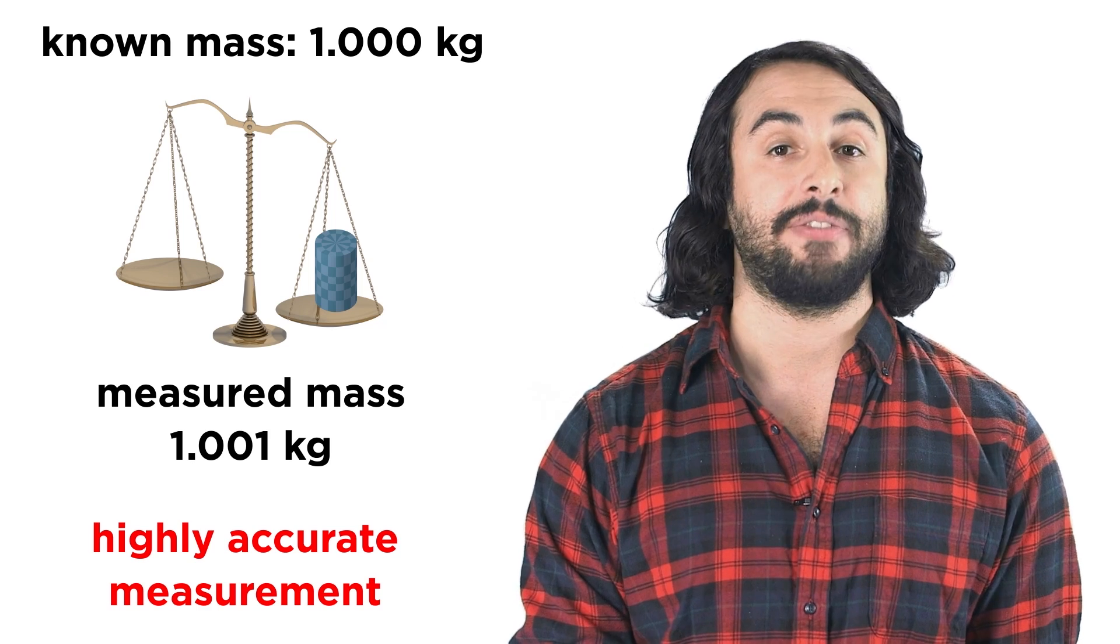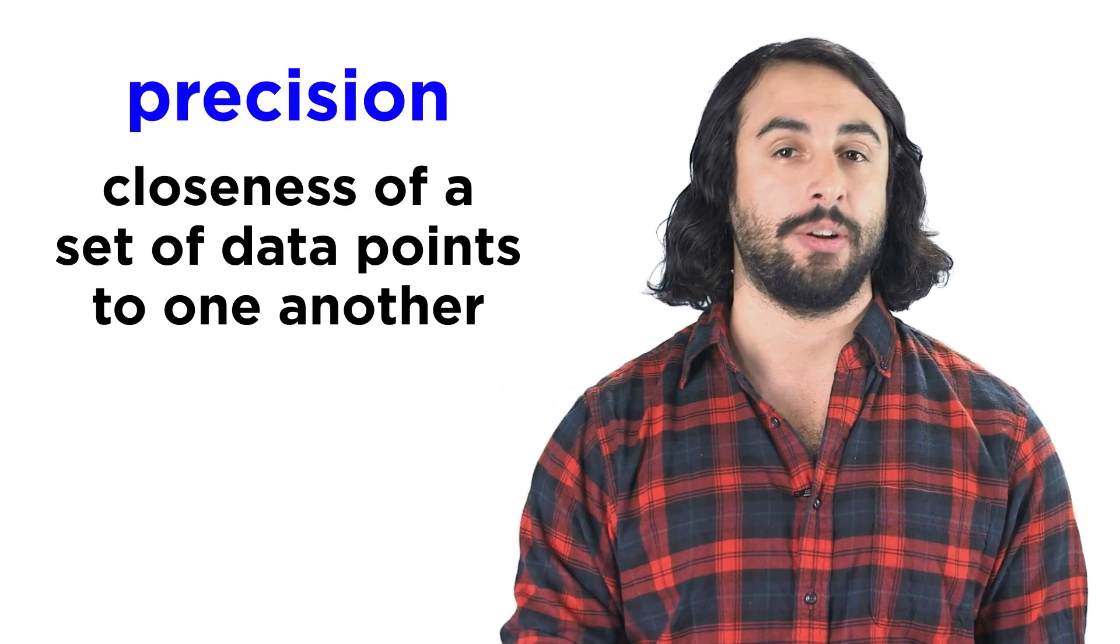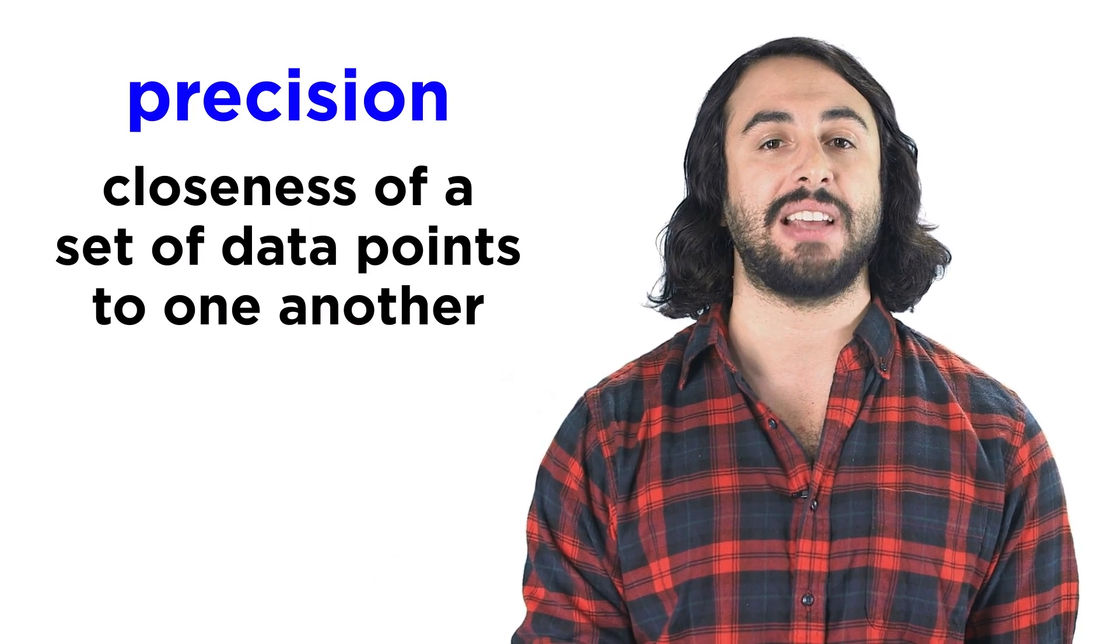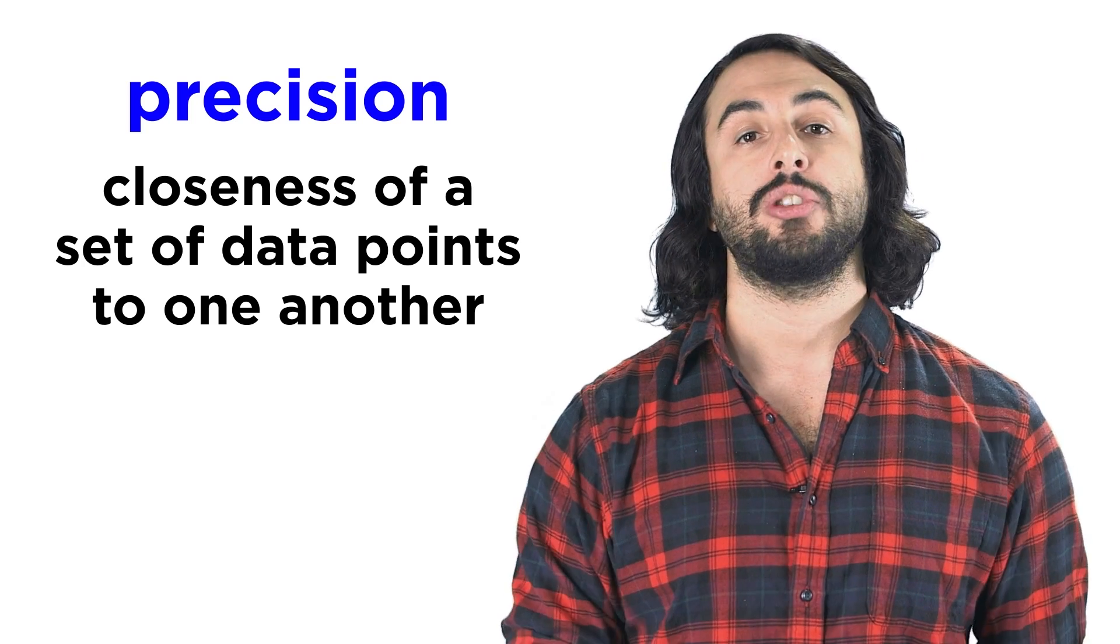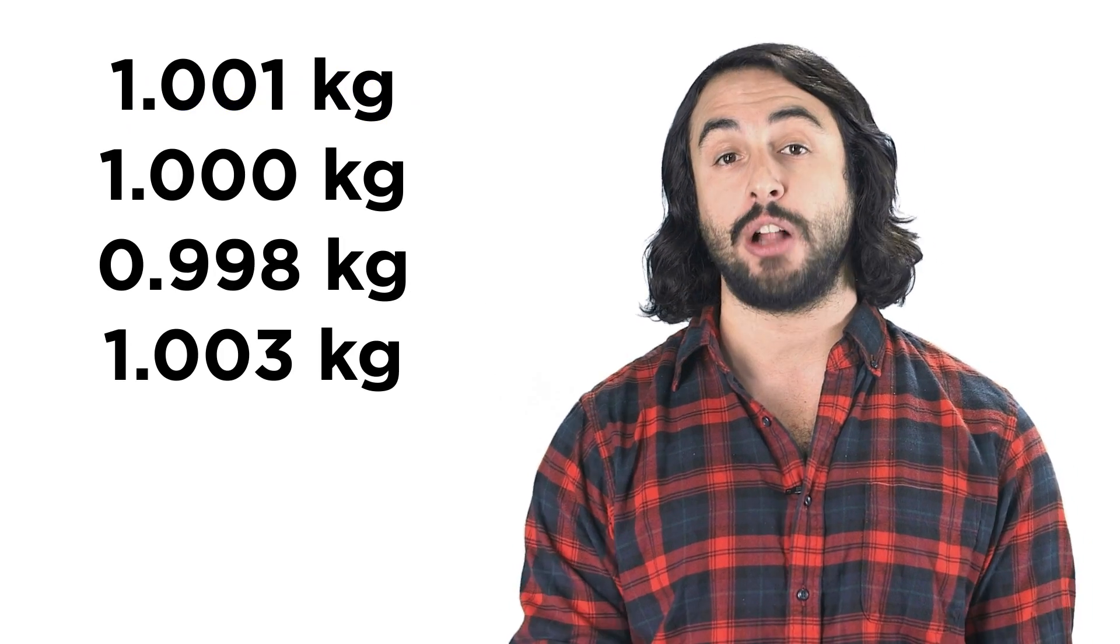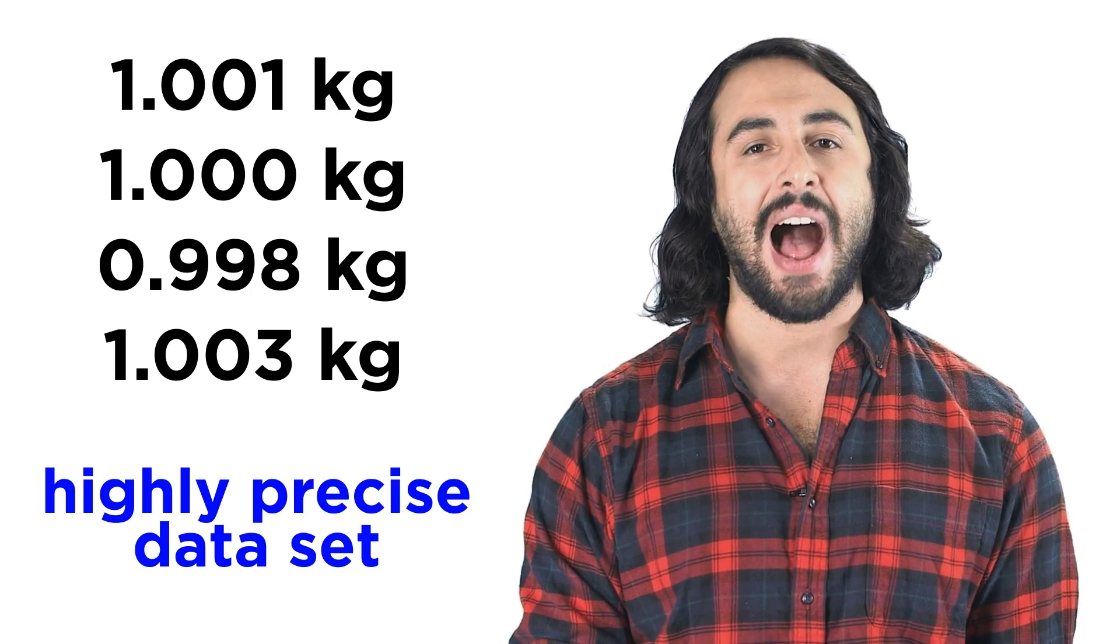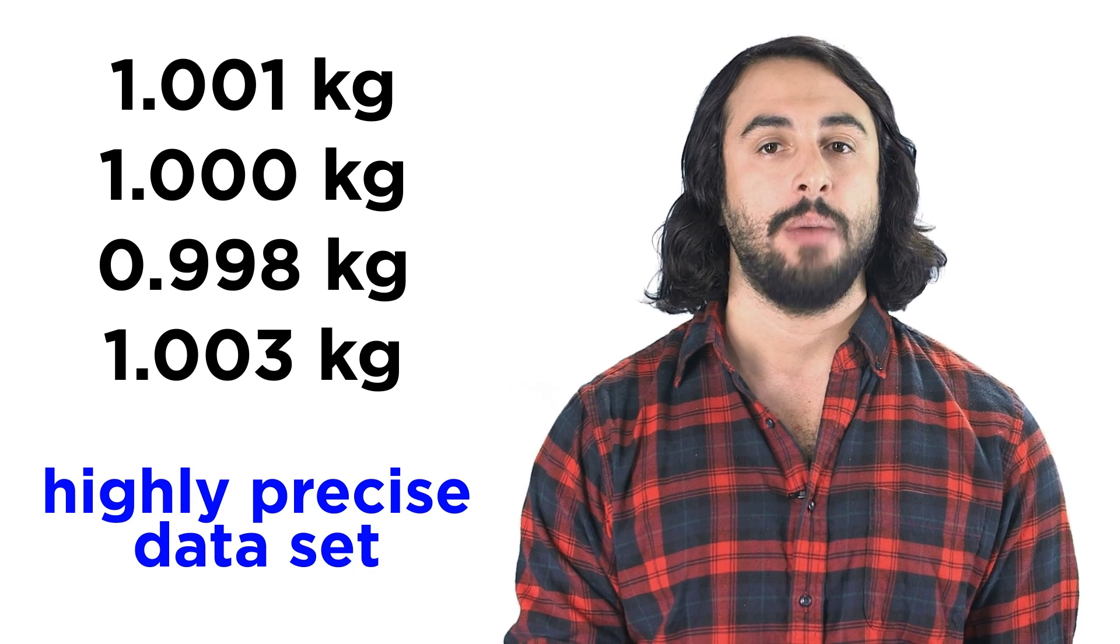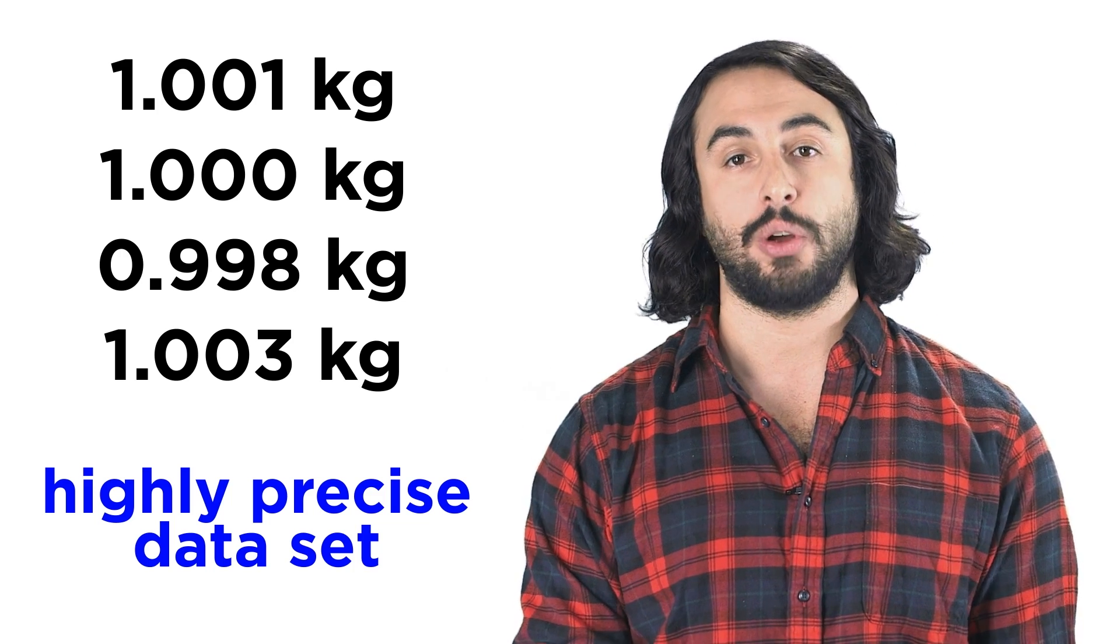The word precision refers to how closely a set of data correlates. So if we took this measurement on many different balances and we got the following set of data, we could say that it is a highly precise data set, because all of the values are very close to one another.